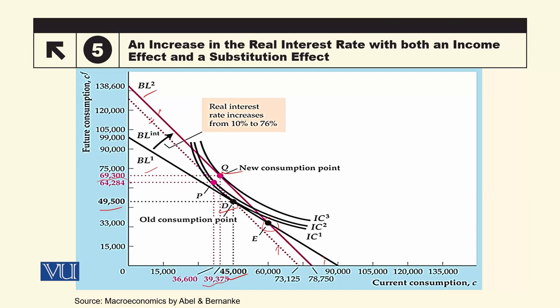اس budget line کے بارے میں دو باتوں کا خیال رکھا ہے: ایک یہ کہ initial point D اس میں سے گزر رہی ہے، اور دوسری یہ کہ یہ نئی budget line BL2 کے parallel ہے — parallel ہونے کا مطلب یہ کہ یہ نئے interest rate کو reflect کر رہی ہے۔ D point میں سے through ہونے کا مطلب یہ کہ initial consumption bundle، interest rate میں اضافے کے بعد بھی اس کے لئے available رہتا ہے۔ اس dotted line پر equilibrium point P ہے — D سے P پر move کرنا یہ substitution effect ہے۔